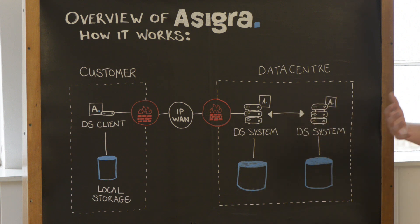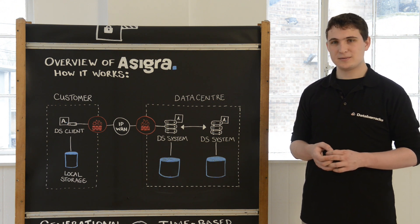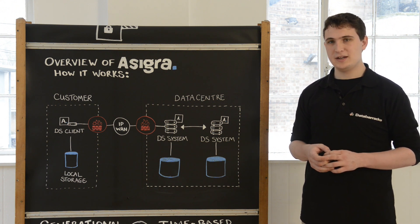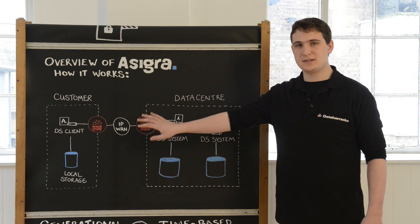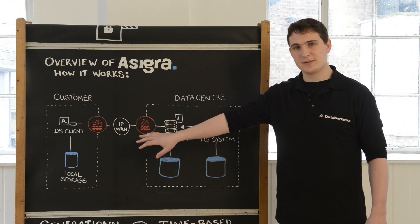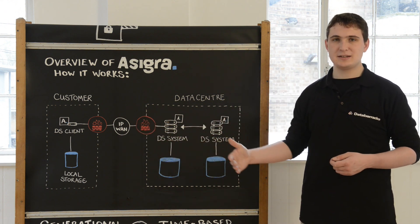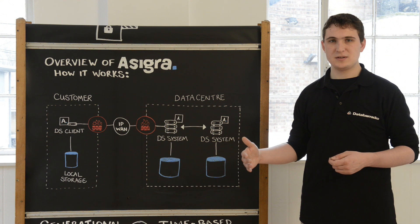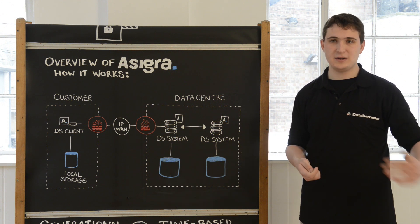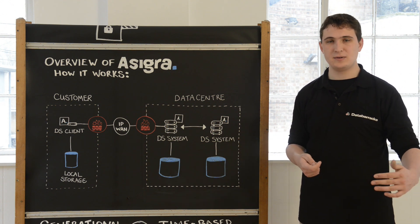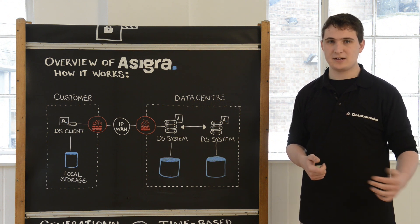There are three restore options available with Asigra. The first restore option is to restore from the local cache copy that's held with the DS client. This is backup data that has already been sent to the DS systems, but a local cache or first copy is also held with the local storage held with the DS client.